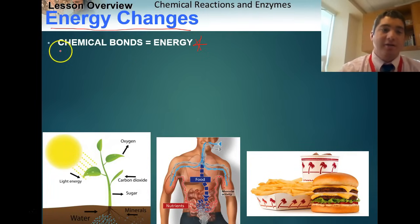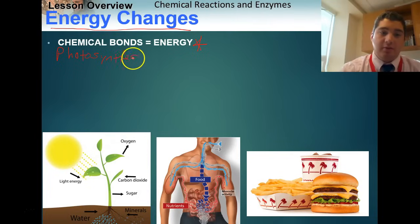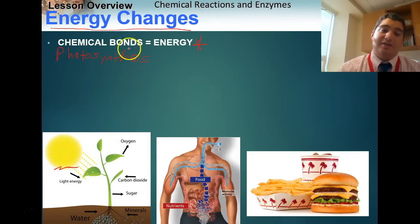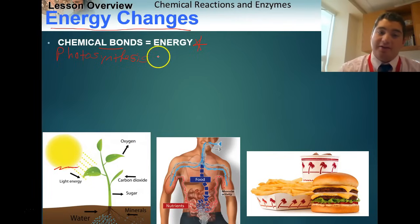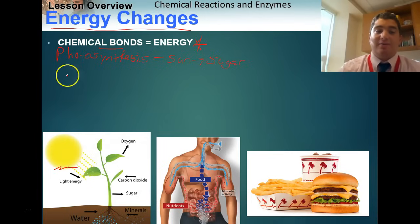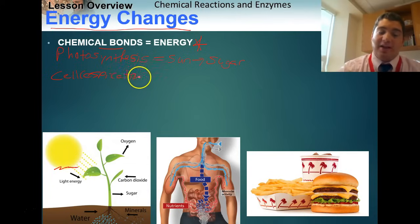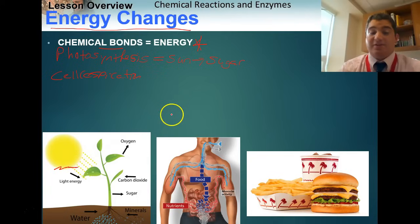There are two great forms of chemical bonds and energy we use in life. First, plants do photosynthesis — they use energy from the Sun and take that energy to make chemical bonds in the form of sugar. So again, chemical bonds are energy: photosynthesis converts Sun energy into sugar.